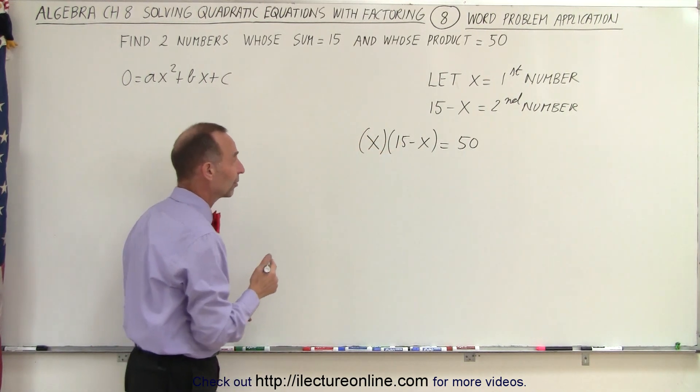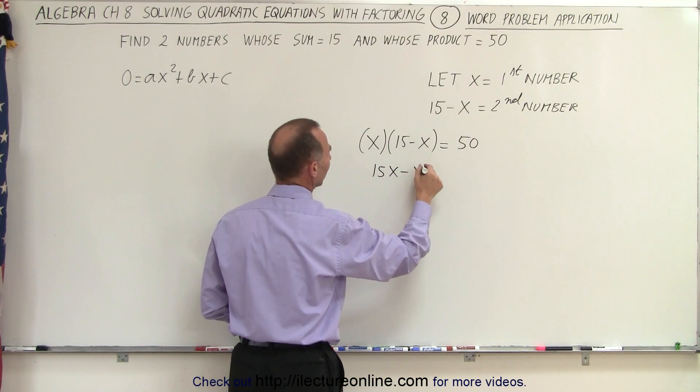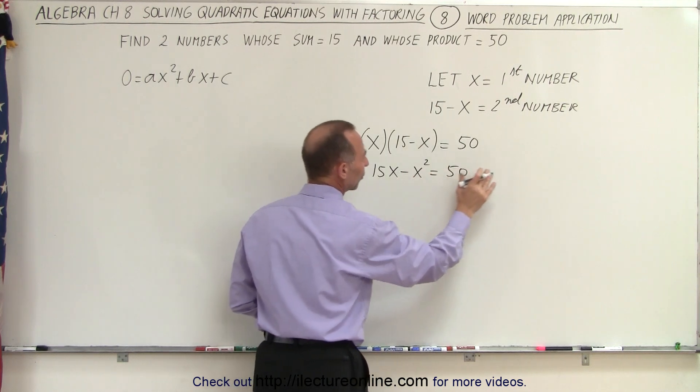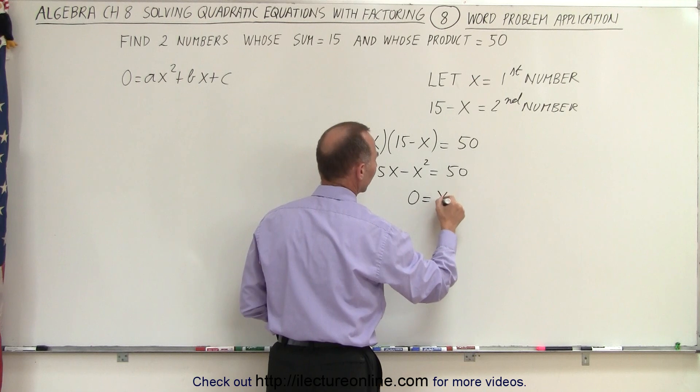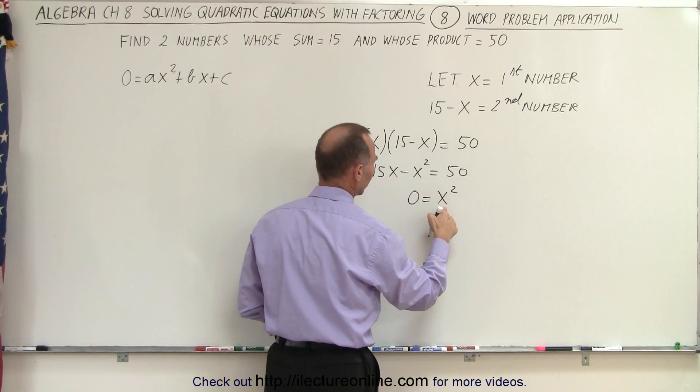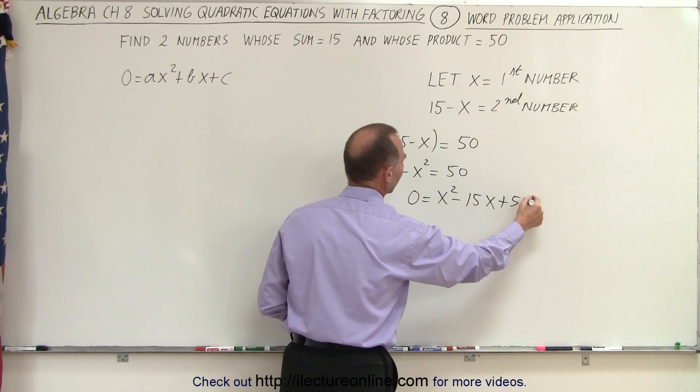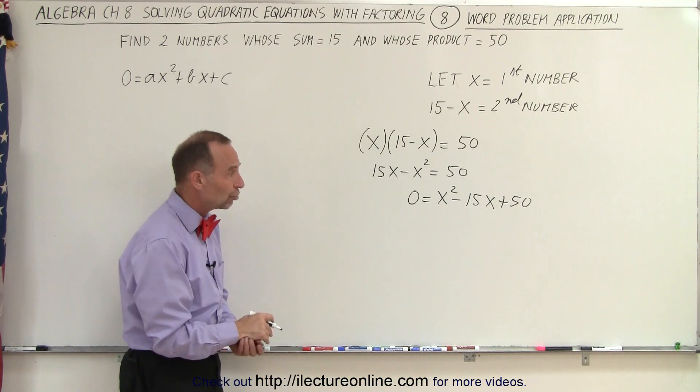So first we'll multiply out what's on the left side. So this gives us 15x minus x squared equals 50. Now if I move everything to the right side, I end up with 0 equals a positive x squared, because the negative x squared becomes a positive, this becomes a minus 15x and plus 50. Now you can see that's clearly a quadratic equation.